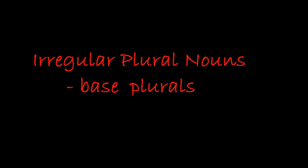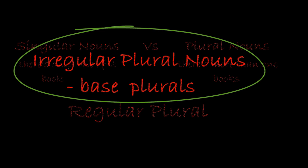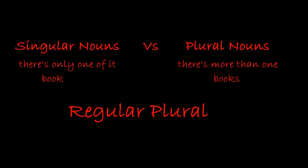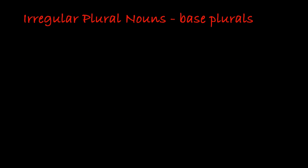Hello English Learners. In this episode, I'm going to talk about a different kind of irregular plural. Previously I said that if you take any English noun, say the word 'book', and you tack an S onto the end, you get the word 'books'. That's how you form the regular plural. But I've been talking about the irregular plural — the plural that is not regular.